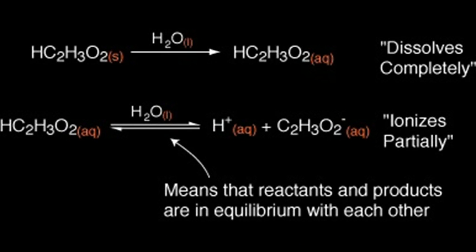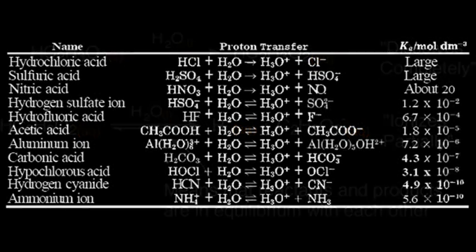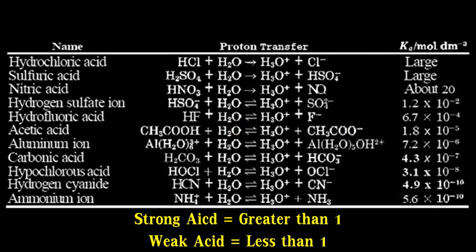Strong acids tend to almost completely dissociate in water, while weak acids only partially dissociate. Due to this, the equilibrium constant of a weak acid is less than 1, while the equilibrium constant of a strong acid is greater than 1.